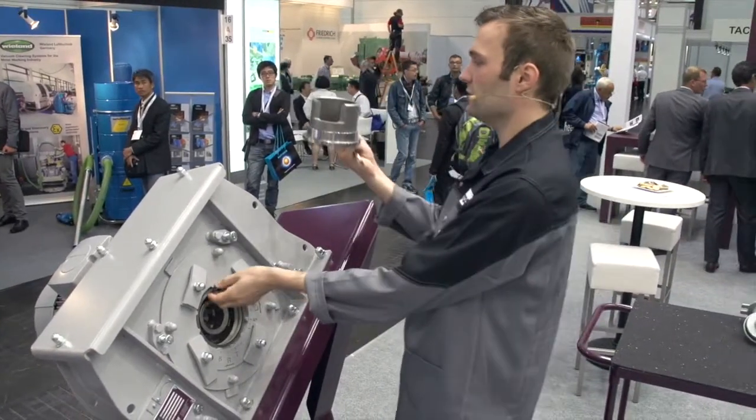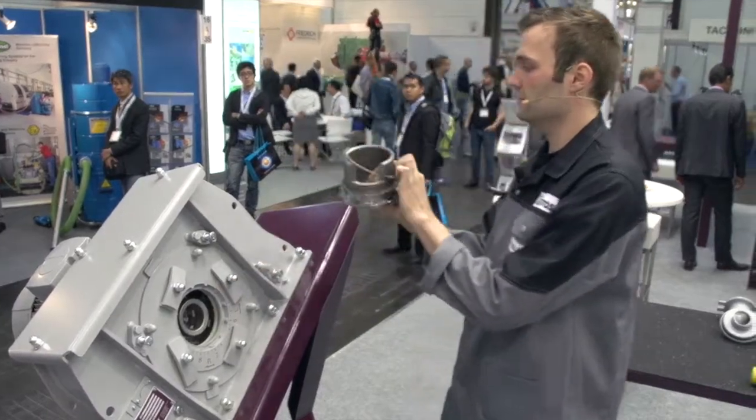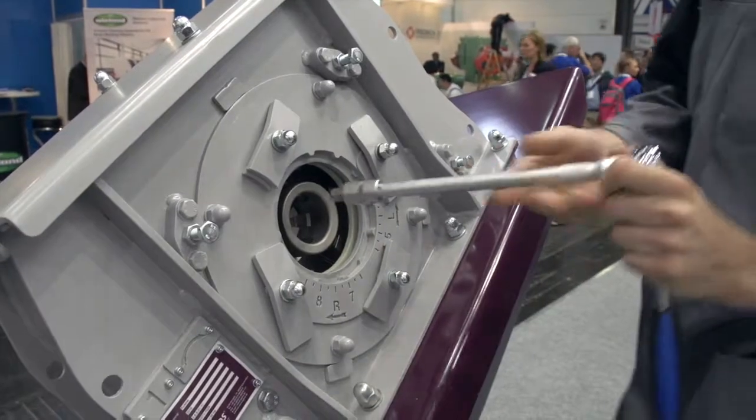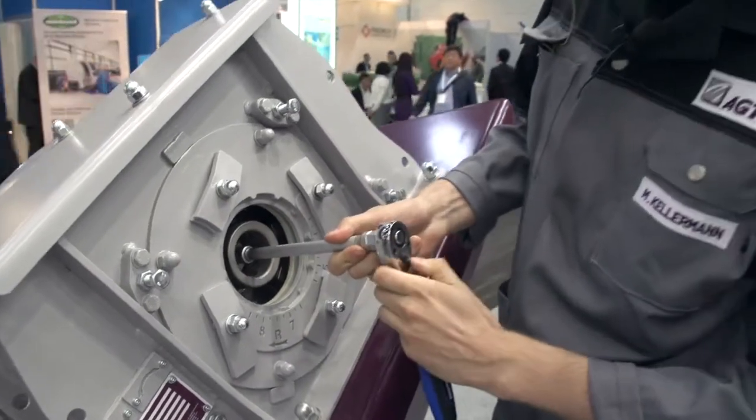Apart from the guiding sleeve, the spacer rings must be removed as well. Loosen the screw of the impeller with a torque spanner and remove it.